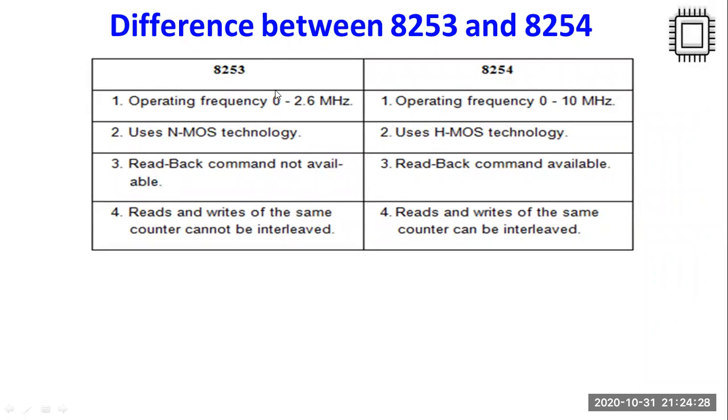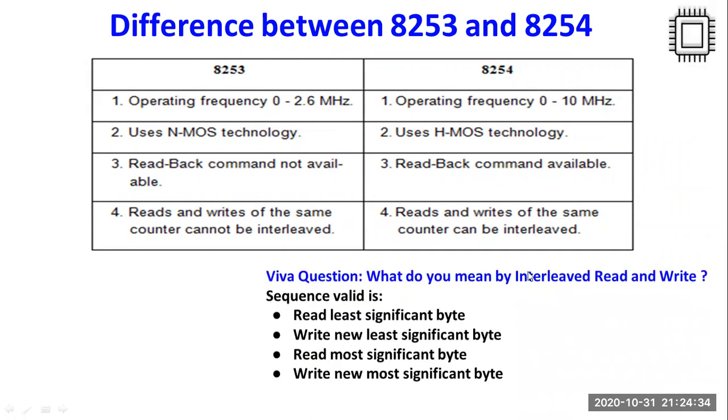There is one more difference between 8253 and 8254 IC and that is enabling an interleaved read-write command in 8254 IC. What happens in this is you have a sequence of operations which are enabled for read as well as write operations.